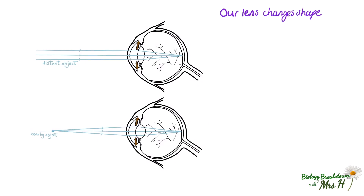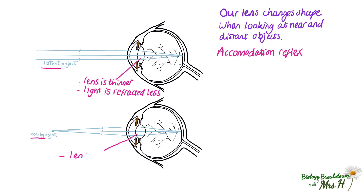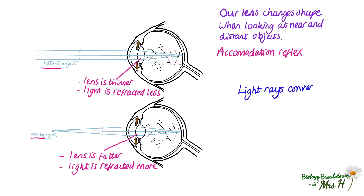Our lens changes shape when looking at near and distant objects. This change in shape is a reflex action and is called the accommodation reflex. When looking at distant objects, the lens is thinner and the light is refracted less. When looking at nearby objects, the lens will be fatter and the light refracted more. Notice that the light is refracted so that the rays converge to a focus point exactly on the fovea.